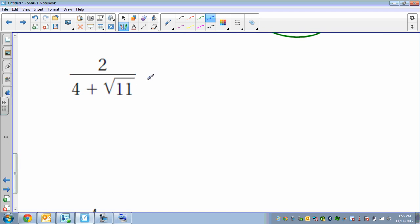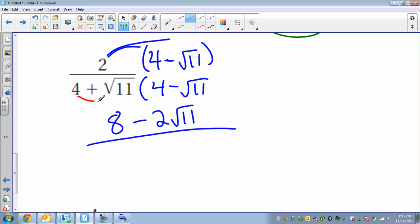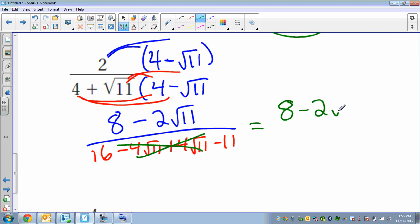Here's our next one. Again, we're going to multiply by the conjugate. The opposite of 4 plus square root of 11 is 4 minus the square root of 11. Whatever we do to the bottom, we have to do to the top. We distribute, and then on the bottom we foil. First, outer, inner, last. We can simplify—these go away. 8 minus 2 square roots of 11 over 5. 16 minus 11 is where you get the 5. That's our final answer.